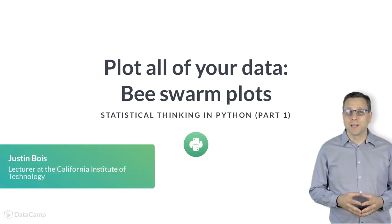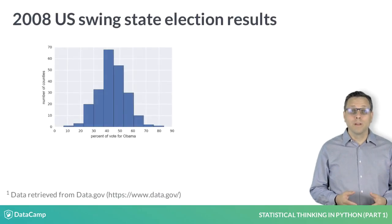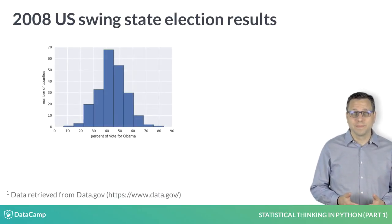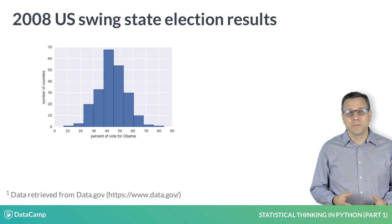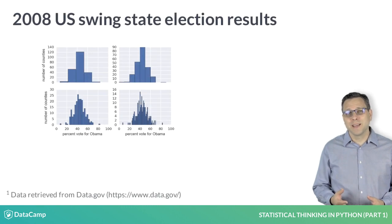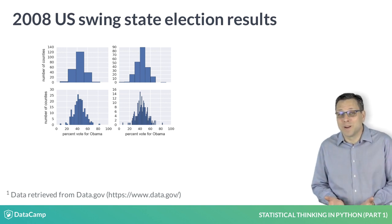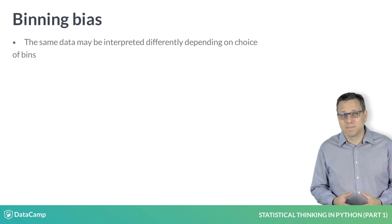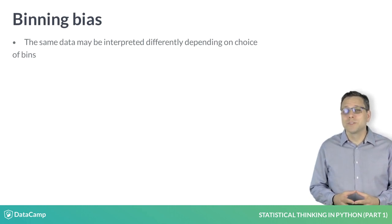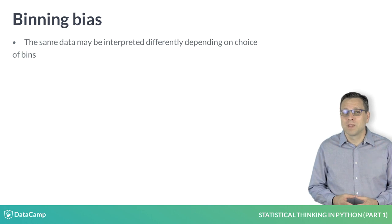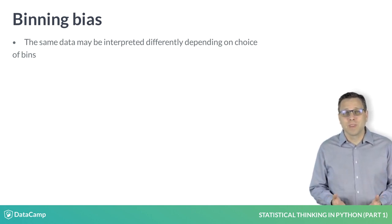The histogram of county-level election data was informative. We learned that more counties voted for McCain than for Obama. However, a major drawback of using histograms is that the same data set can look different depending on how the bins are chosen, and choice of bins is in many ways arbitrary. This leads to binning bias — you might interpret your plot differently for two different choices of binning. An additional problem with histograms is that we are not plotting all of the data; we are sweeping the data into bins and losing their actual values.